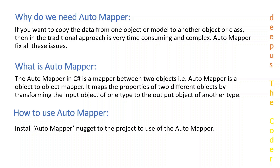Let's see why we need to use AutoMapper in our project. If you want to copy data from one object to another object, or DTOs to models, and you follow the traditional methodology, it's very time-consuming and complex. AutoMapper fixes all these problems with just a few lines of code.